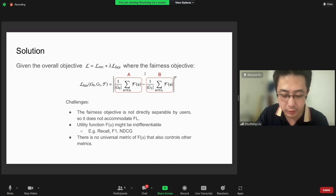The main challenge is that the unfairness loss is not directly separable by users. Additionally, this evaluator depends on the metric of user performance F(u), which can be represented by all kinds of ranking metrics like recall, F1, and NDCG. It is usually hard to find the universal metric that works for all other metrics.